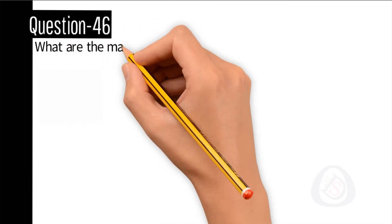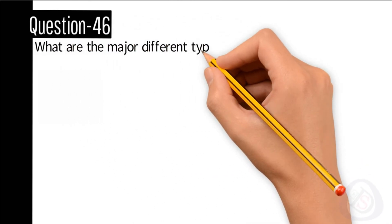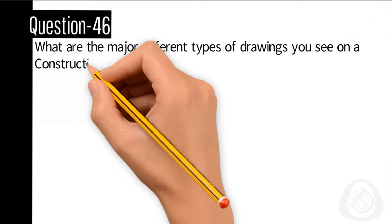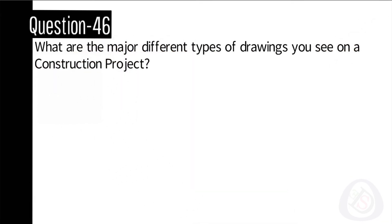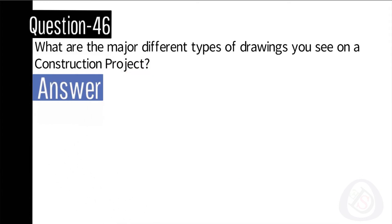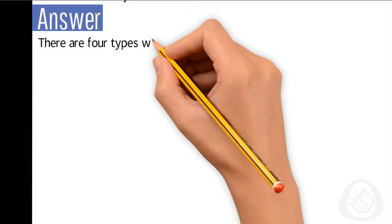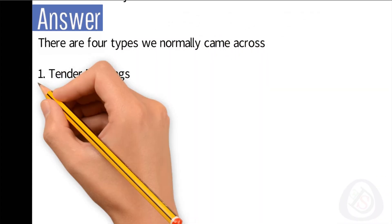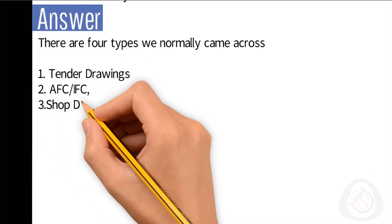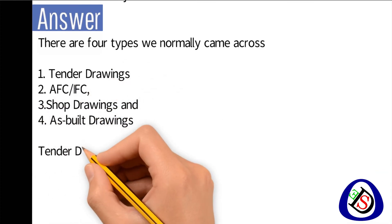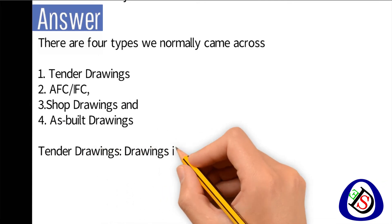Question number 46: What are the major different types of drawings you see on construction projects? There are four types we normally come across: one, tender drawings; two, AFC or IFC; three, shop drawings; and four, as-built drawings. Tender drawings are drawings included in the tender documents, released by the client for pre-qualified contractors.